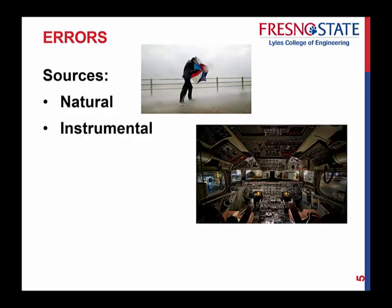The second source is instrumental errors, which come from imperfections in the construction or adjustment of instruments — any moving parts or components inside. Older instruments had scales that weren't perfectly placed. Today, even though you might spend forty or fifty thousand dollars on equipment, something inside could still not be working perfectly, so you always have to keep that in mind.